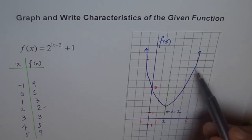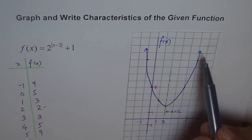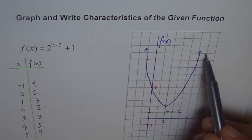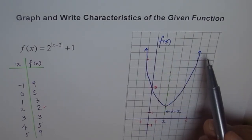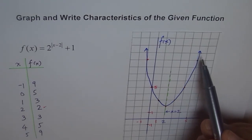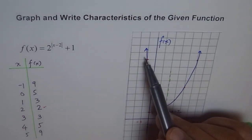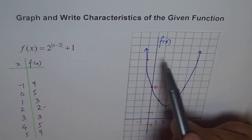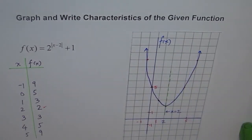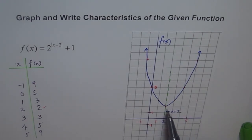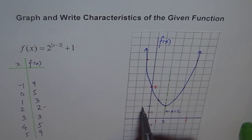End behavior: as x approaches positive infinity, f(x) approaches positive infinity. As x approaches negative infinity, f(x) also approaches positive infinity. Domain is all real numbers.